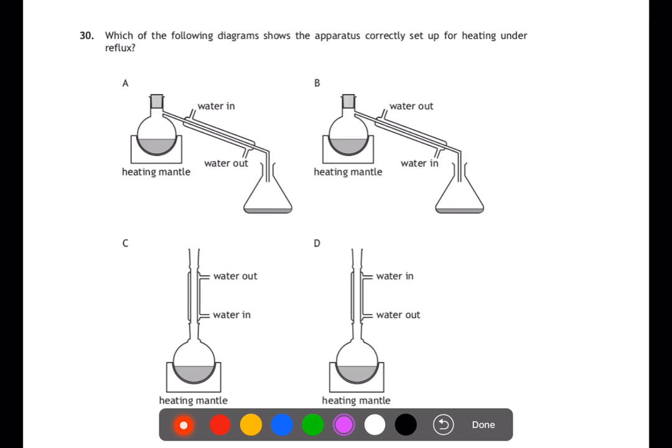Question 30. Which of the following shows the apparatus correctly set up for heating under reflux? For heating under reflux, you want to heat for an extended period of time whilst condensing any gases that are produced. So A and B can be ignored as they are for distillation. And now we need to look at C and D. The difference between these two is where the water enters and where the water leaves. The water should always go in at the bottom of the condenser and come out at the top. So C is the answer.